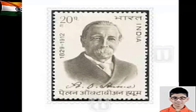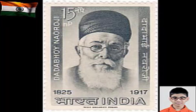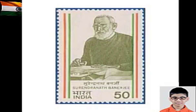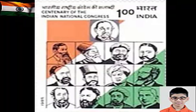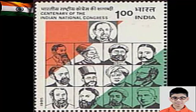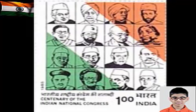Inspired by suggestions made by A.O. Hume, a retired Scottish civil servant, 72 Indian delegates including Dadabhai Naoroji and Surendranath Banerjee met in Bombay in 1885 and founded the Indian National Congress. Mostly members of upwardly mobile and western-educated allies engaged in professions such as law, teaching and journalism, by 1900 Congress had emerged as an all-India political organisation.